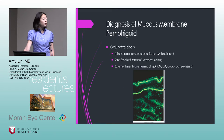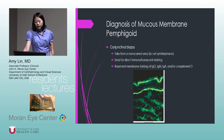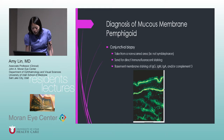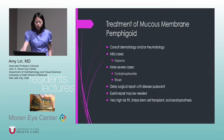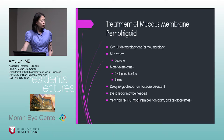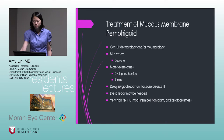Diagnosis is by conjunctival biopsy — ideally from a non-scarred area. It requires special media and direct immunofluorescent staining, which will show basement membrane staining of IgG, IgM, IgA, and/or complement 3. Work with dermatology and/or rheumatology for systemic treatment. For mild cases, oral dapsone. For more severe cases, cyclophosphamide, Rituxan, or other immunosuppressive agents. Delay surgical repair until the disease is quiescent, because aggressive surgical repair leads to more scarring and worse outcomes.